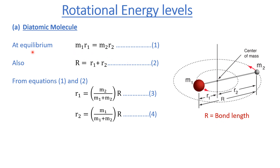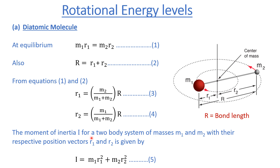From rotational dynamics, we know that at equilibrium condition m1·r1 must equal m2·r2. We also know that R equals r1 plus r2. From these two equations we can derive that r1 and r2 are expressed in terms of the total separation R and the two masses.